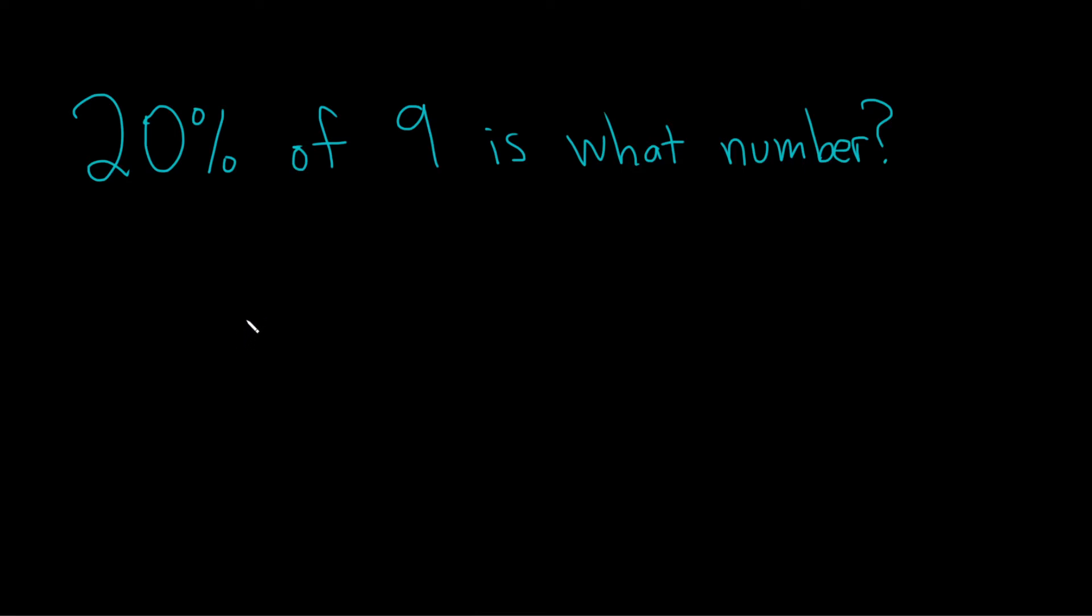20% of 9 is what number? So the first step is to convert this percentage into a decimal. So 20% can be written as 0.20.